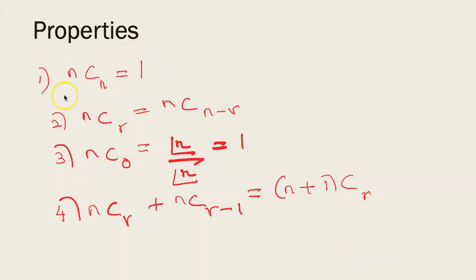There are some basic properties namely nCn = 1, nCr = nC(n-r) - this is an important property, nC0 = 1, and nCr + nC(r-1) = (n+1)Cr. So property 2 and 4 are used very often.